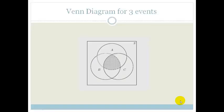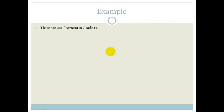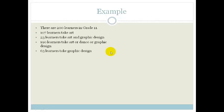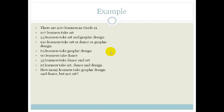So it's going to look something like this, where we've got a sample space, this big sample space over here, and then we've got our three different subsets. So let's look at an example. There are 200 learners in grade 11, 107 learners take art, 23 take art and graphic design, 190 take art, dance or graphic design, 63 take just graphic design, 90 take dance, 35 take dance and art, 15 take art, dance and design. And they ask you how many learners take graphic design and dance but not art?